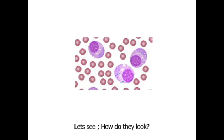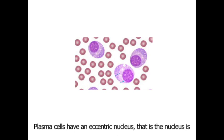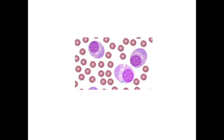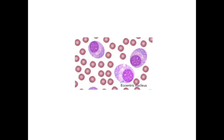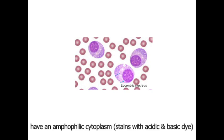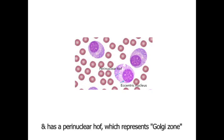Now you know the function of plasma cells and their origin from B cells. Let's see how they look. When defining morphology of plasma cells, they have an eccentric nucleus — that is, the nucleus is not placed centrally — with coarse cartwheel chromatin, and an amphiphilic cytoplasm which stains with both acidic and basic dye, and it has a perinuclear hof that represents the abundant Golgi zone within the plasma cells.